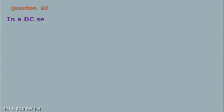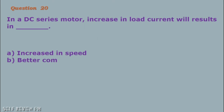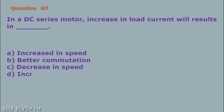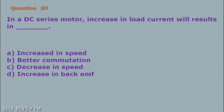Question number 20: In a DC series motor, increase in load current will result in: A. Increased in speed B. Better commutation C. Decrease in speed D. Increase in back EMF. The correct answer is letter C, decrease in speed.